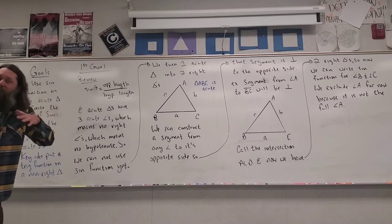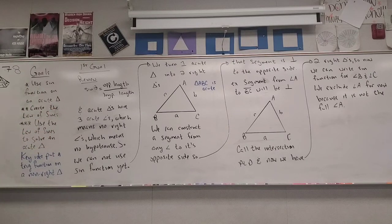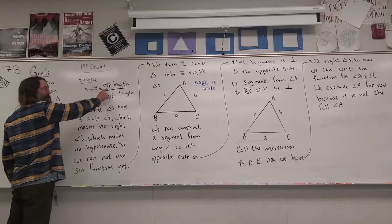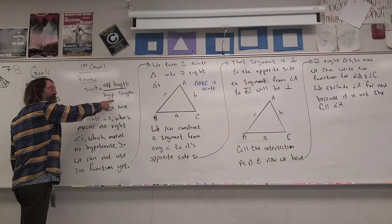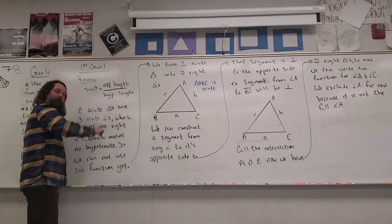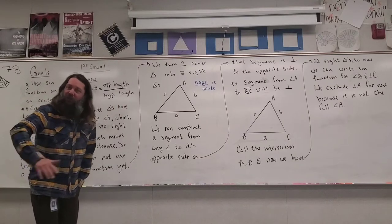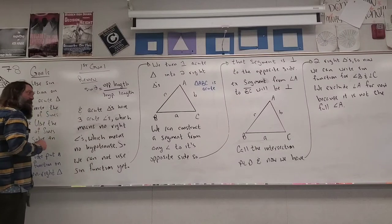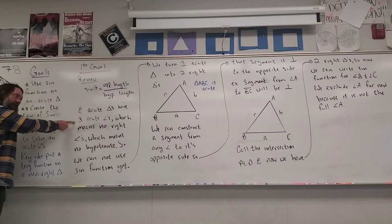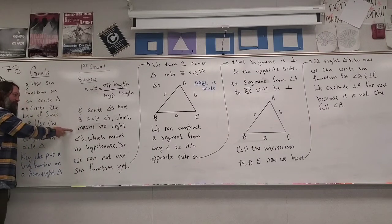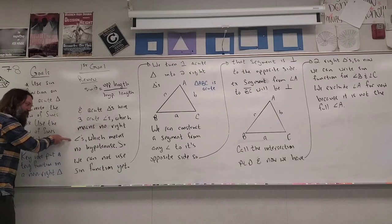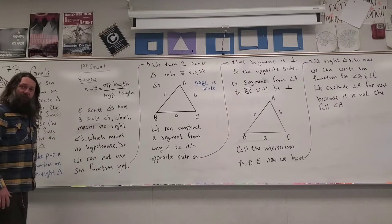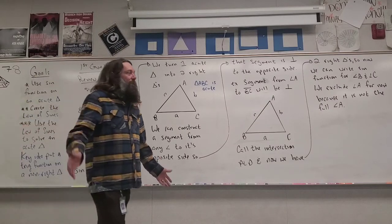We can't do it — so let me explain why. Sine of theta is equal to an opposite length over a hypotenuse length. Hypotenuse lengths only happen on right triangles — no hypotenuse, no sine function. Acute triangles have three acute angles, which means no right angles, which means no hypotenuse. So we cannot use a sine function on an acute triangle.